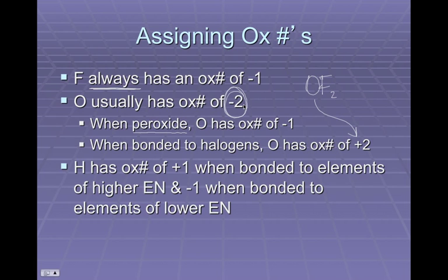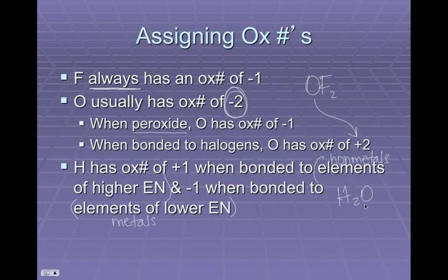Hydrogen can either be +1 or -1 depending on what it's bonded to. Hydrogen is +1 when bonded to elements with higher electronegativity — those are usually nonmetals. It will be -1 when bonded to elements of lower electronegativity — usually metals. So in water, oxygen is -2 and hydrogen is +1 because hydrogen is bonded to a nonmetal. But in potassium hydride, potassium is the positive one and hydrogen is the negative one. It all depends on what hydrogen is bonded to.